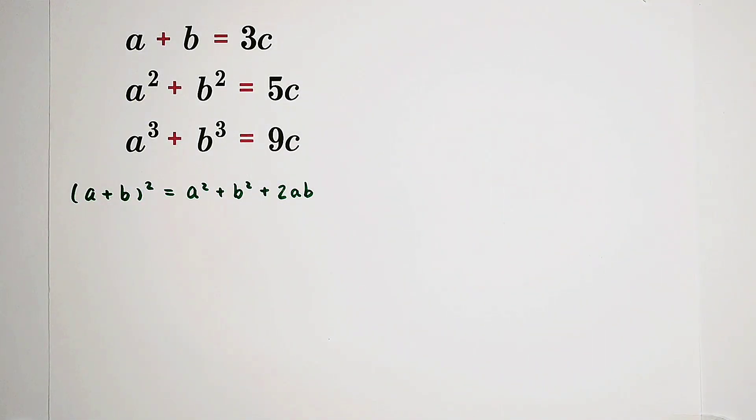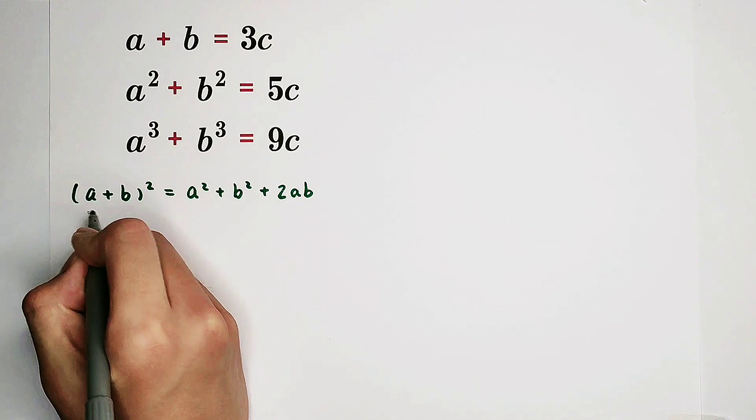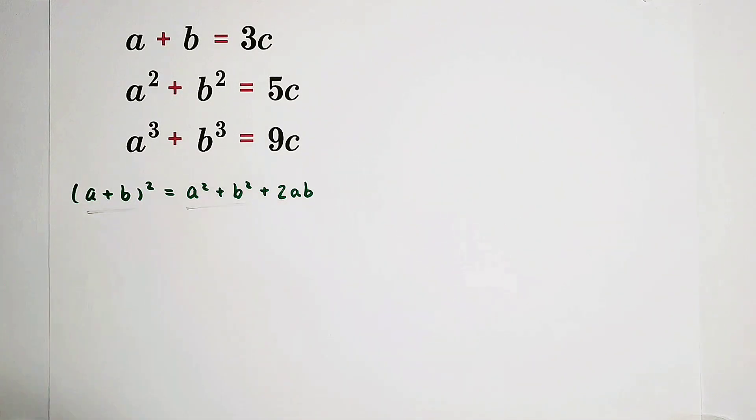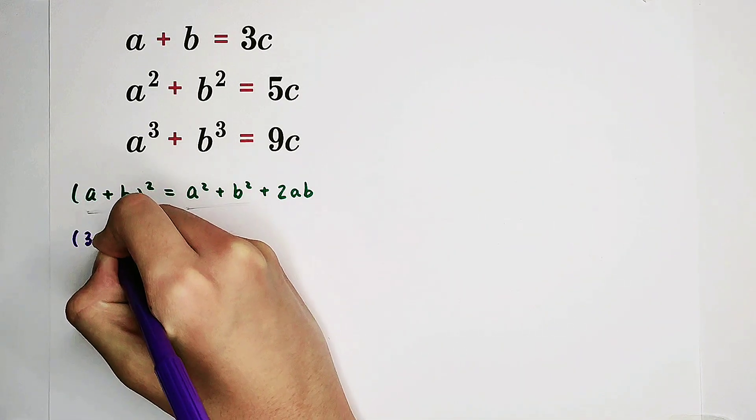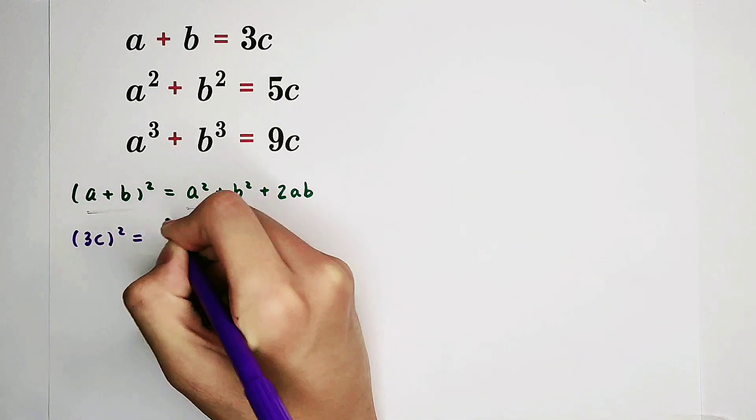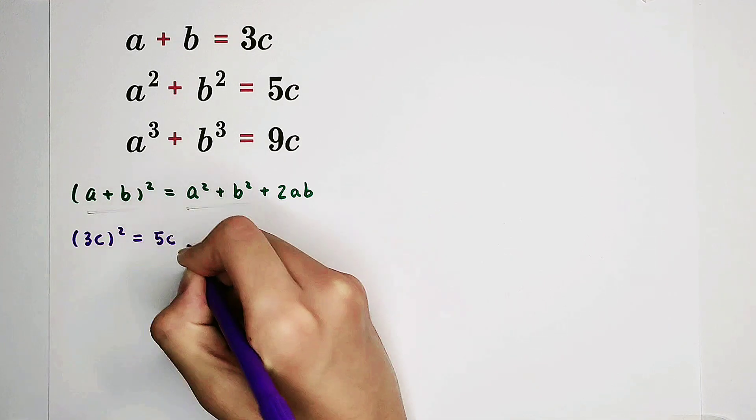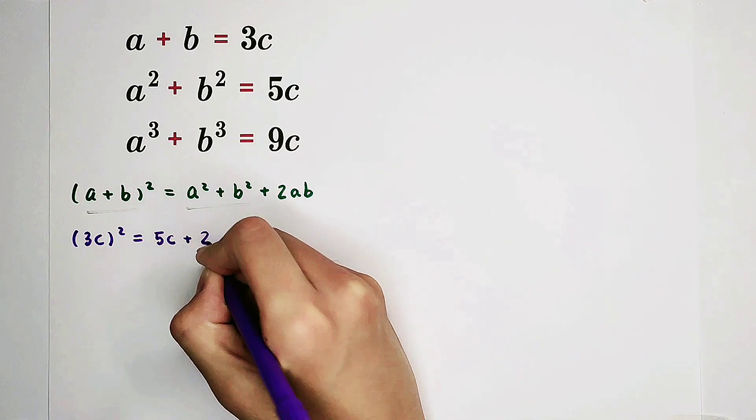Why? Because a plus b we know, a squared plus b squared we also know. a plus b squared, a plus b is 3c, then all squared. a squared plus b squared is 5c, and then plus 2ab.